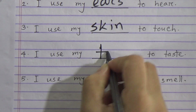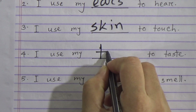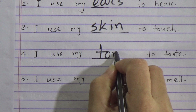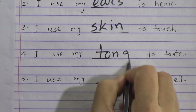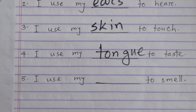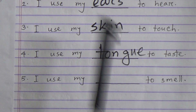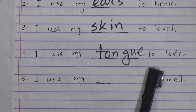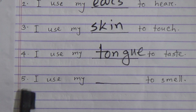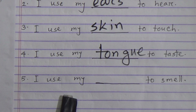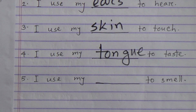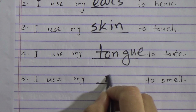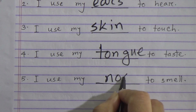Number four: 'I use my ___ to taste.' The answer is tongue — I use my tongue to taste. The spelling of tongue is T-O-N-G-U-E. Number five: 'I use my ___ to smell.' The answer is nose — I use my nose to smell.